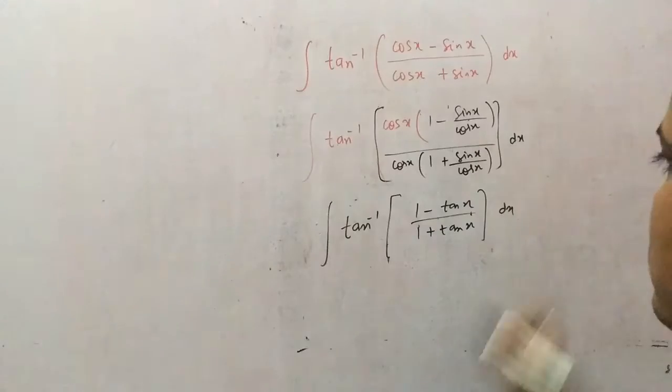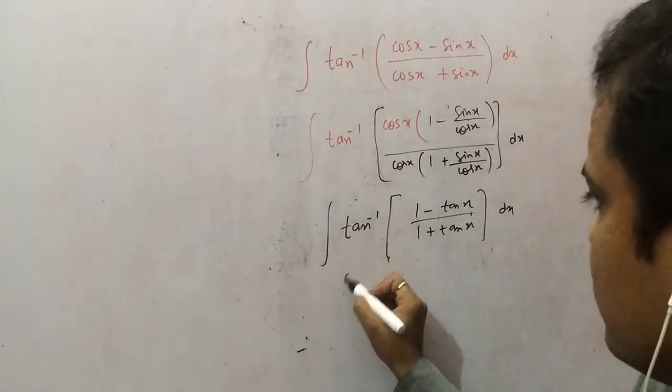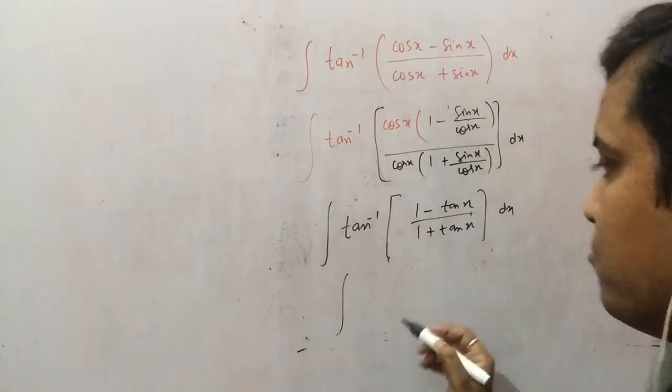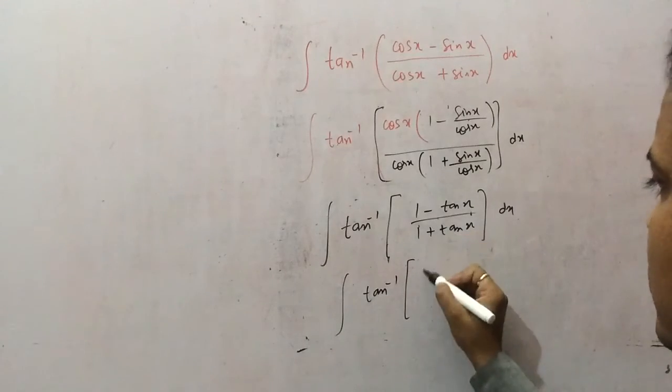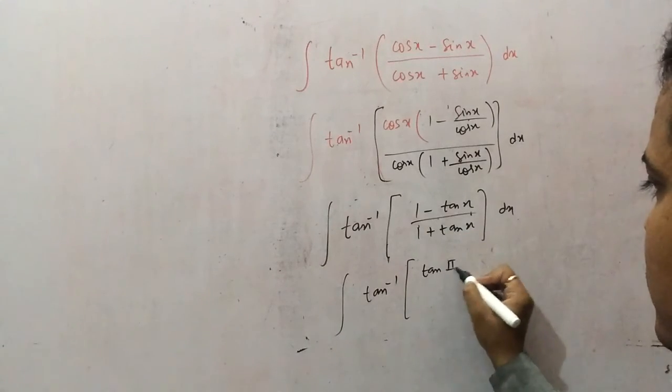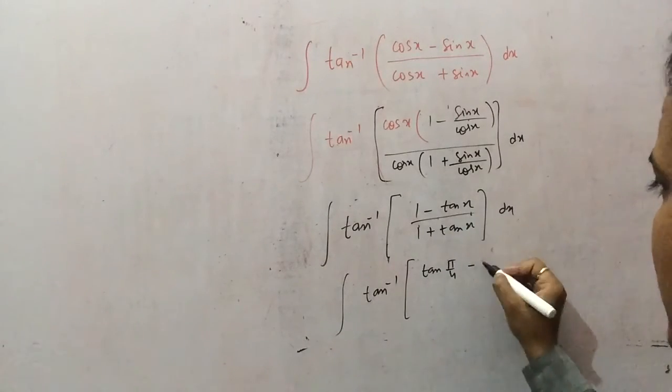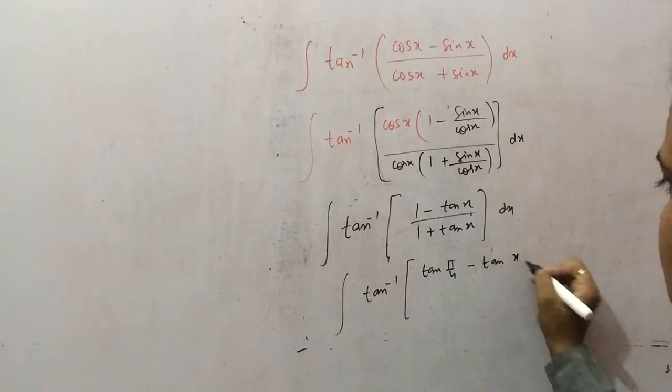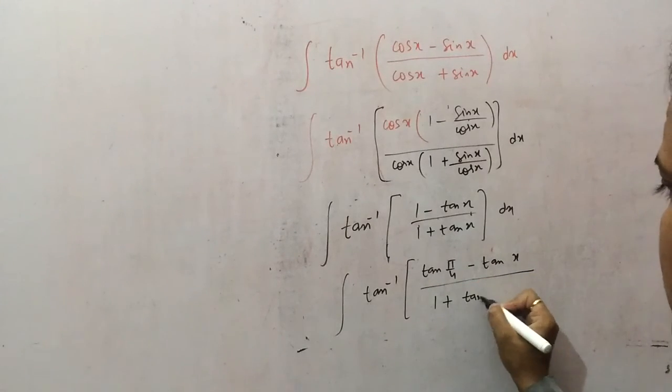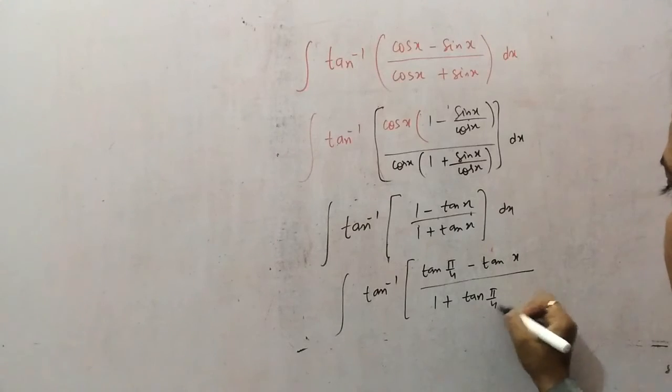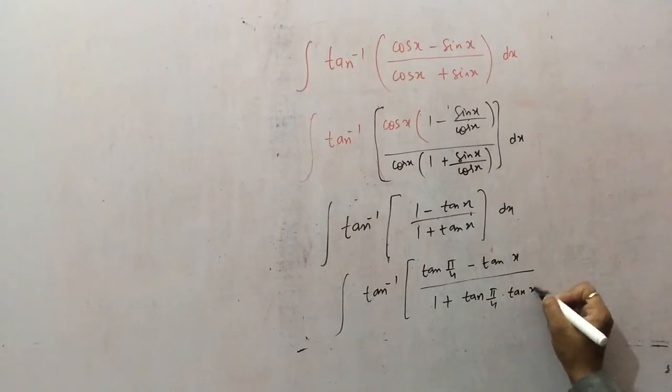Is there any formula? Think about it. We can do here tan pi by 4, tan a minus tan b like tan a minus tan b upon 1 plus tan a tan b. I have manipulated this.